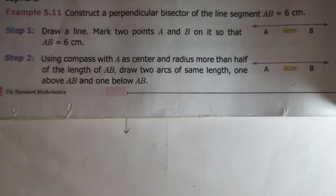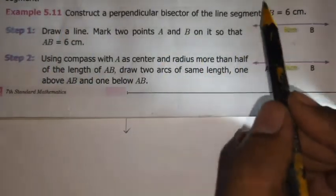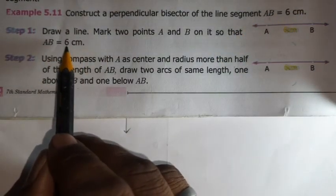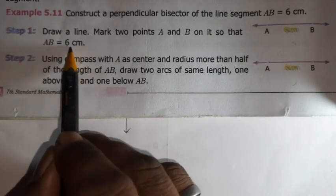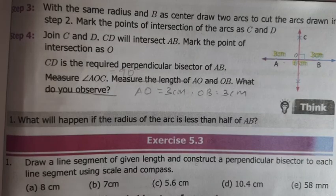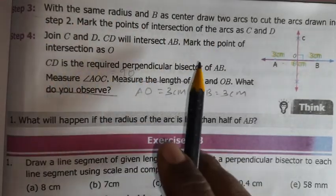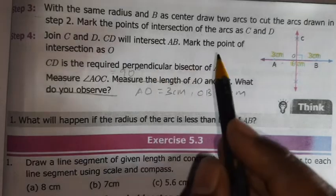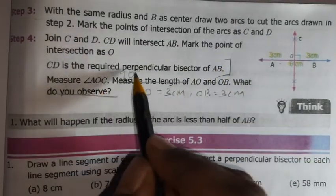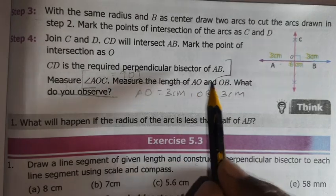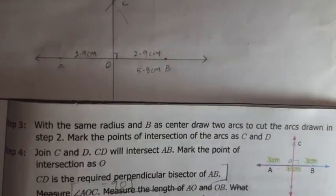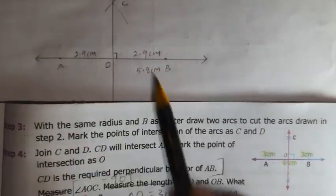The examples. AB equals 6 centimeters, 8 centimeters, 7 centimeters, 5.6 centimeters, 10.4 centimeters, 58 millimeters. The third step, the step is the same. The fourth step. AB line, angle AOC equals 90 degrees. This is angle AOB. For example, AO equals 2.9, OB also equals 2.9.